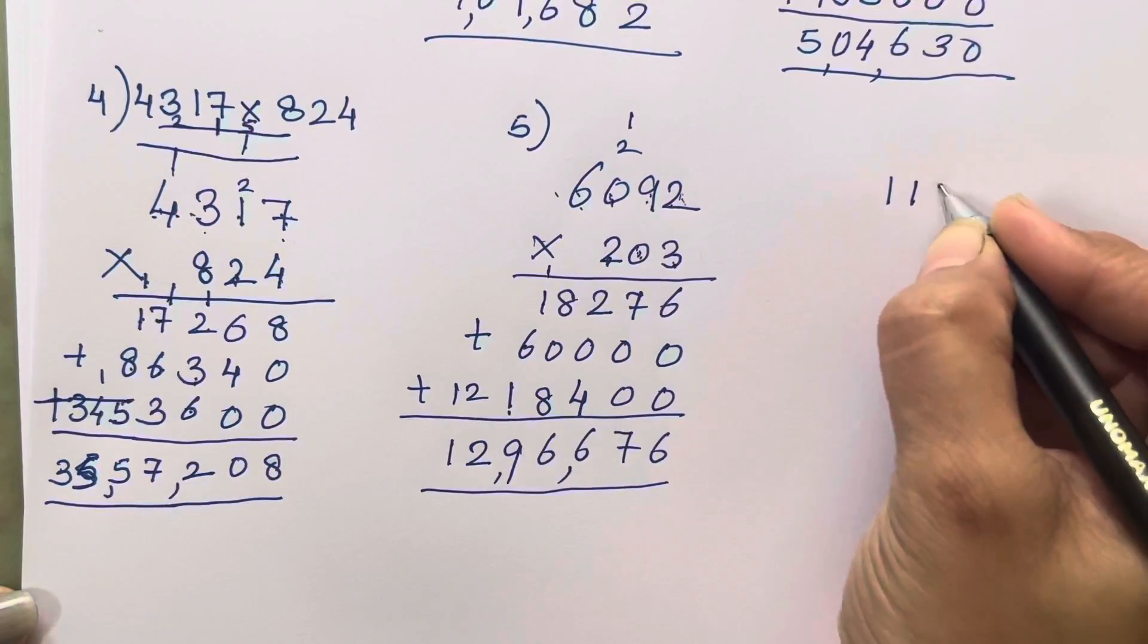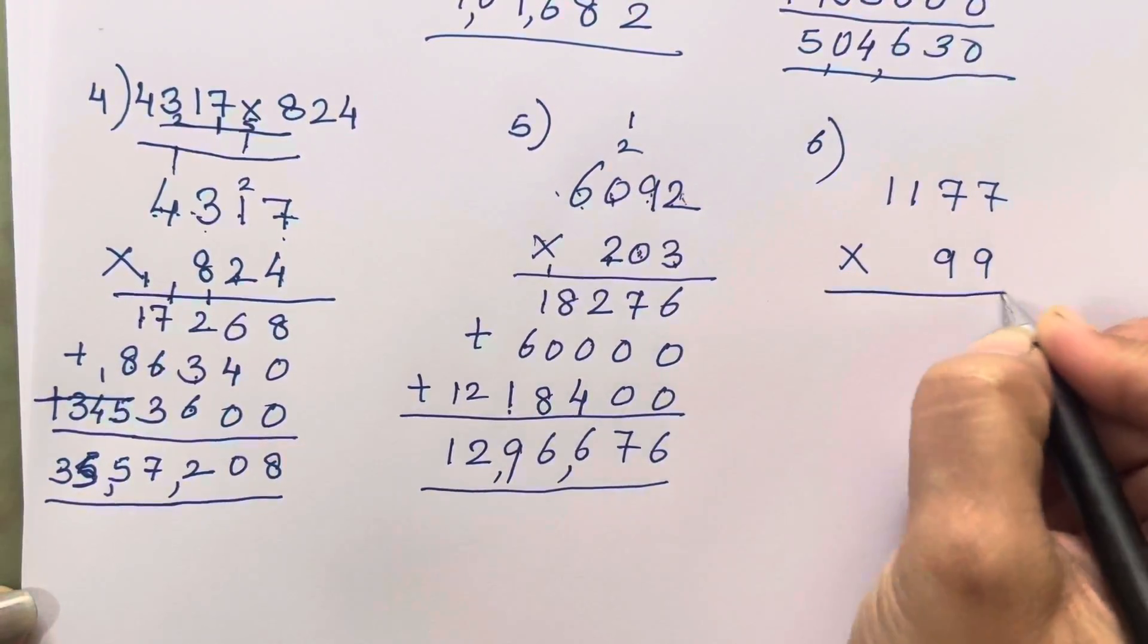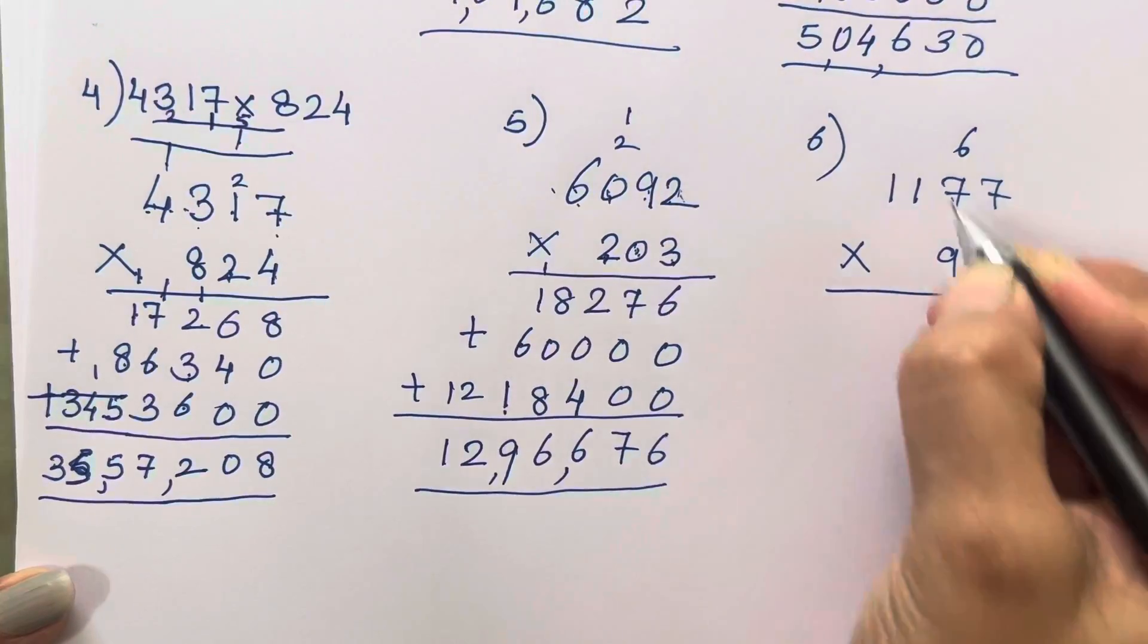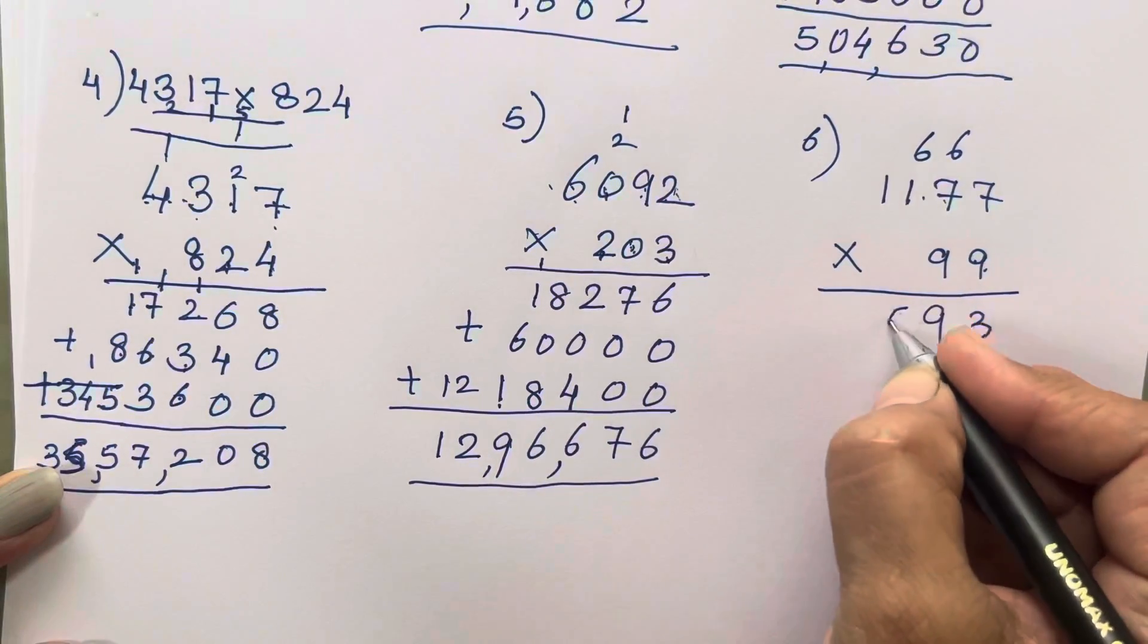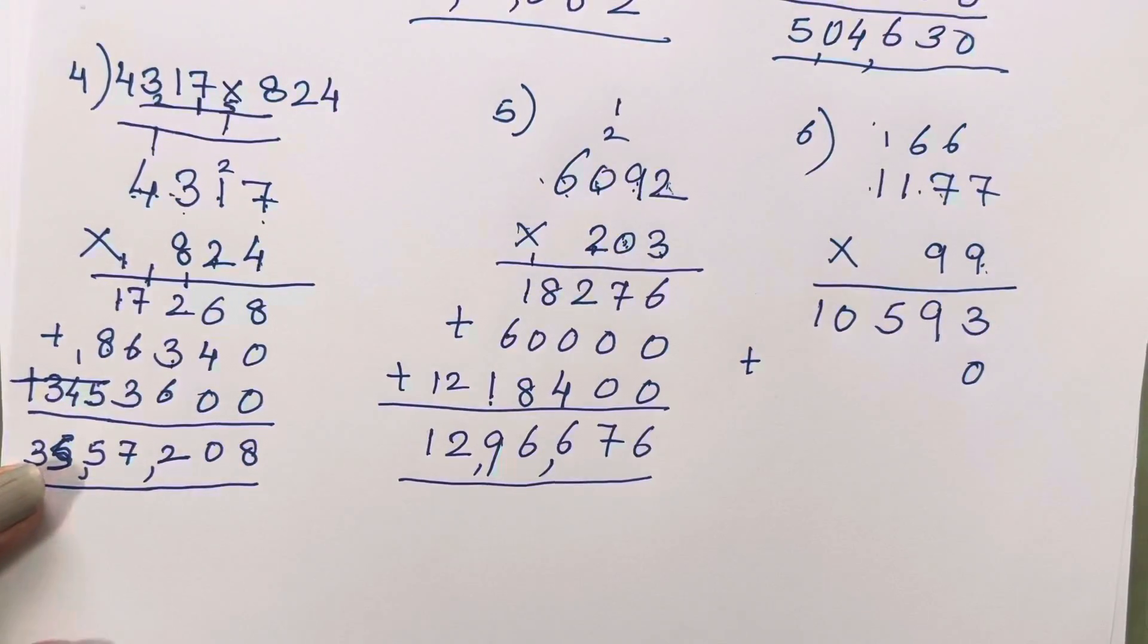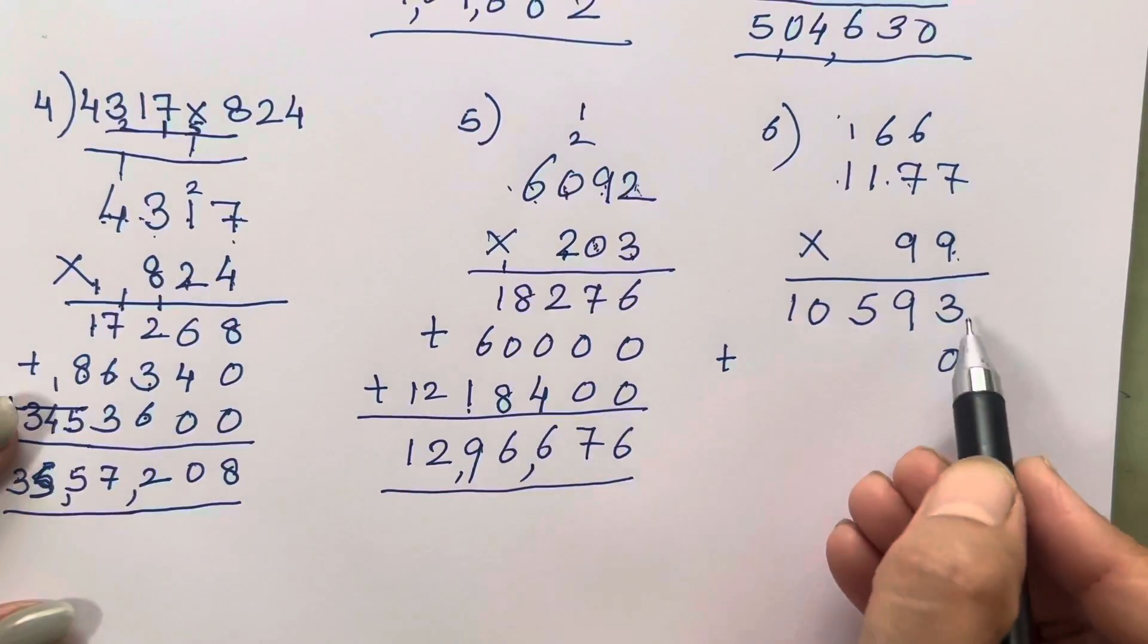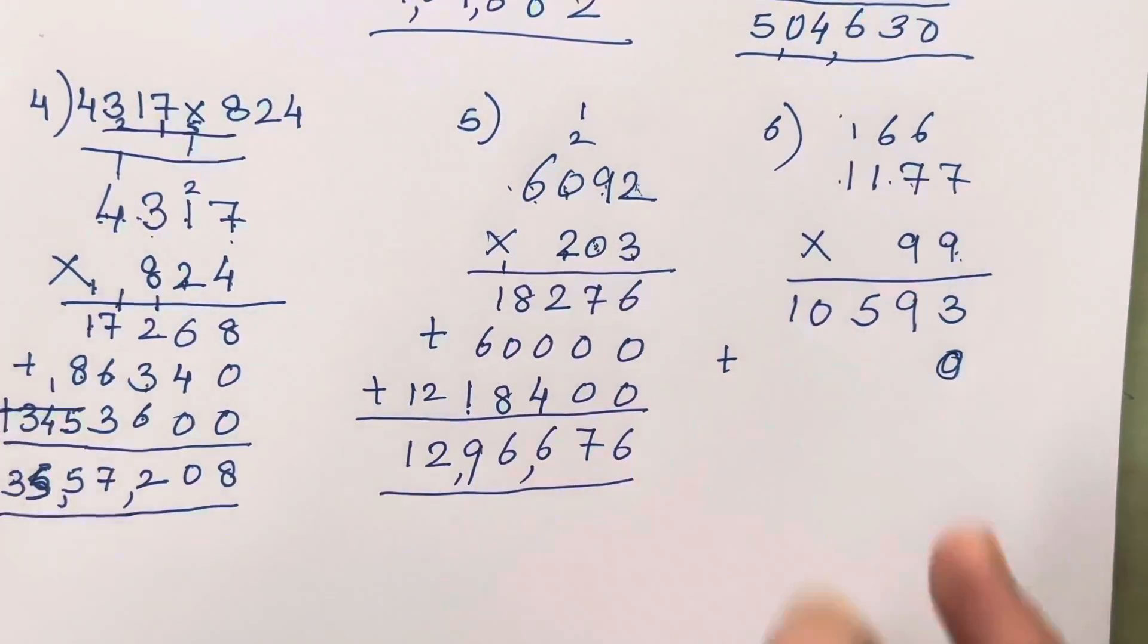It might look difficult children but if you practice it again and again, most of the time you are going to get the answer correct. Now the next number is 1177 into 99. Now over here 2 digits are there so 7 nines are 63, 64, 65, 66, 67, 68, 69. 9 ones are 9 plus 6, 10, 11, 12, 13, 14, 15. 9 ones are 9 and 1, 10. Now I will show you one trick. When you are having the same numbers like 99, 22, or any other similar number, the answer is going to be the same children. You all have to only add 1 zero. If you are in third place then it is 2 zeros and you have to write the whole number like that.